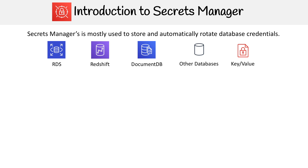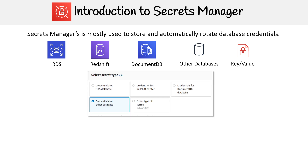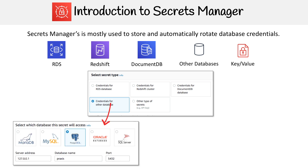You also have key-value, which they say is for APIs. When you select the secret type, for RDS, Redshift, and DocumentDB it's very straightforward. For other databases, you select a specific type of relational engine and provide the server address, database name, and port. For the three managed ones, you just provide the username and password and select the resource within your AWS account.